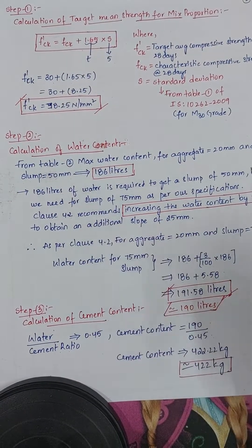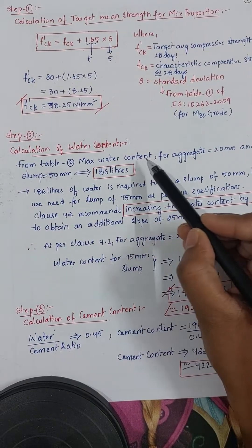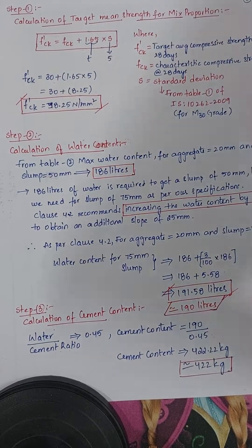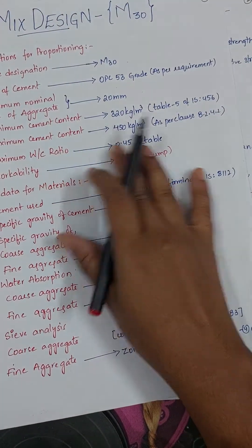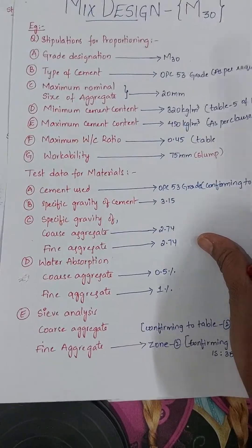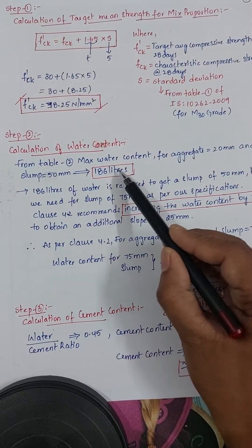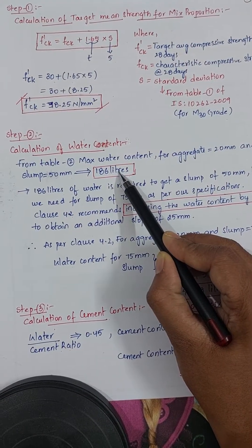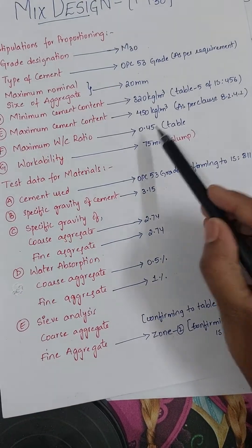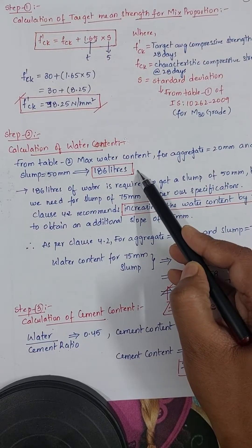Step 2: find the water content required. From table 2 of IS 10262, maximum water content for 20 mm aggregate at 50 mm slump is 186 liters. But in the question, 75 mm slump is given, so for the additional 25 mm slump we need to add 3% extra water content.